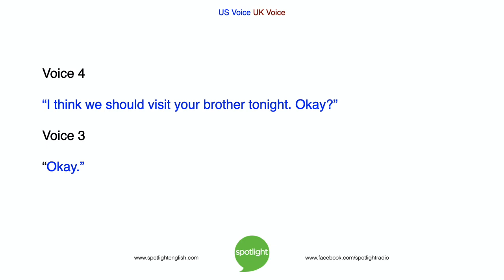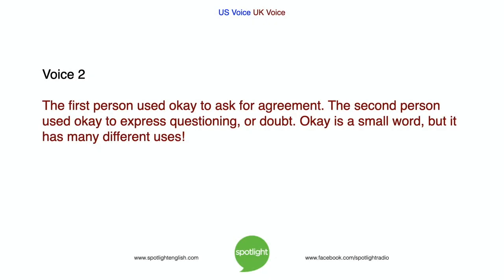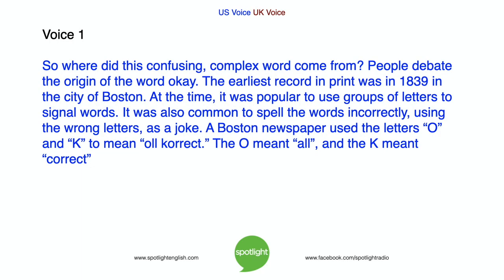A person's tone also changes the meaning of okay as an interjection. I think we should visit your brother tonight. Okay? The first person used okay to ask for agreement. The second person used okay to express questioning or doubt. Okay is a small word, but it has many different uses. So, where did this confusing, complex word come from?